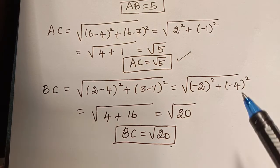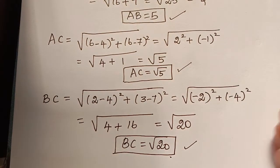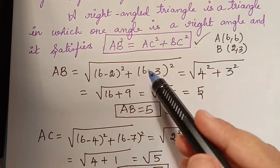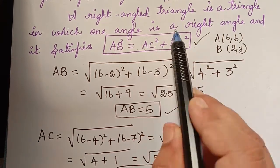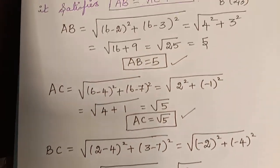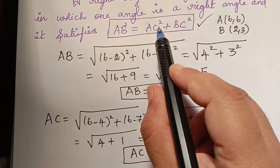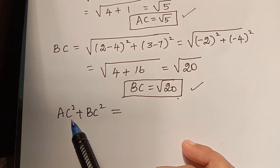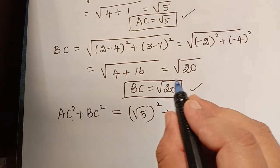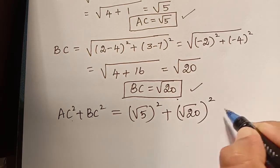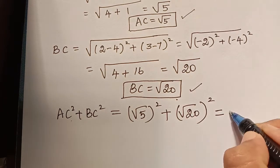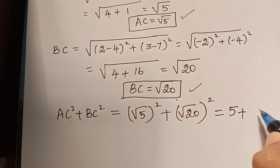To prove that this is a right-angled triangle, we have to prove that AB² = AC² + BC². We consider the right-hand side: AC² + BC² = (√5)² + (√20)² = 5 + 20 = 25.